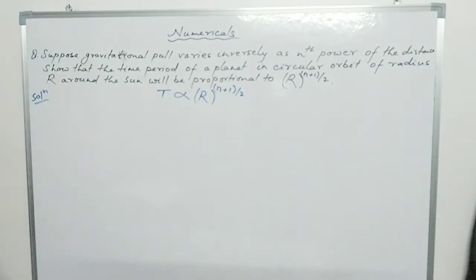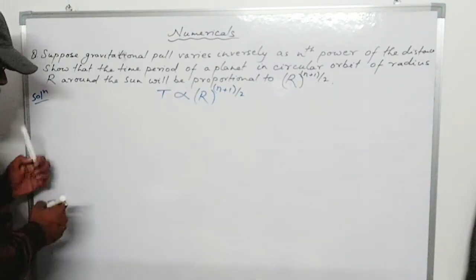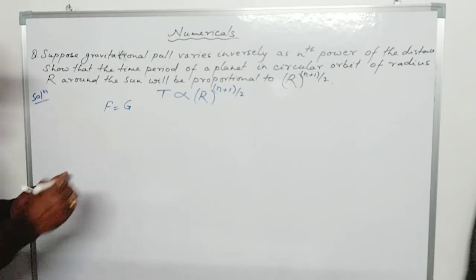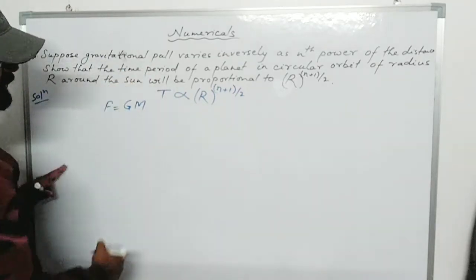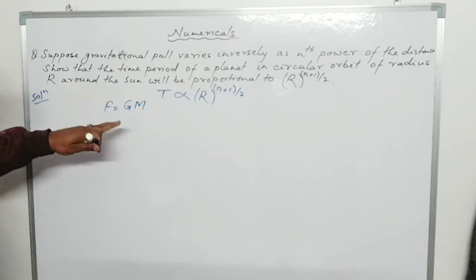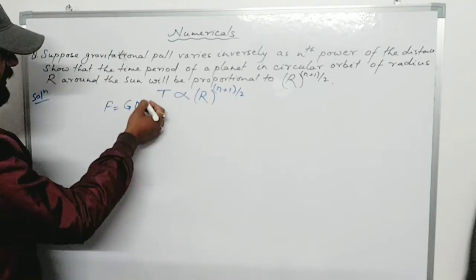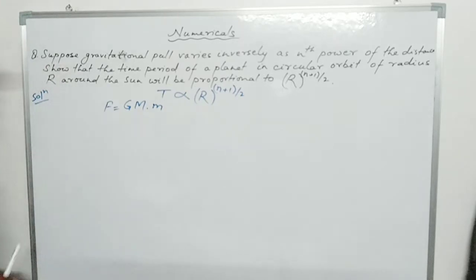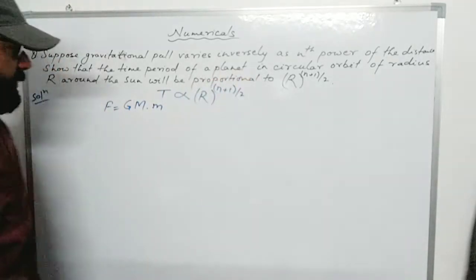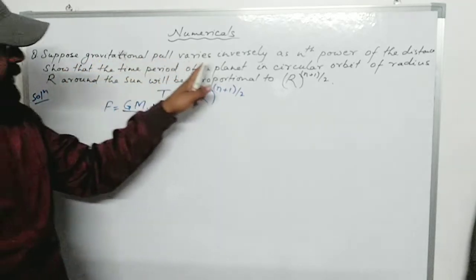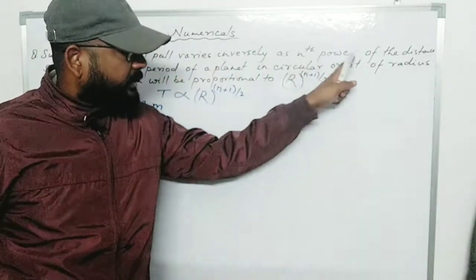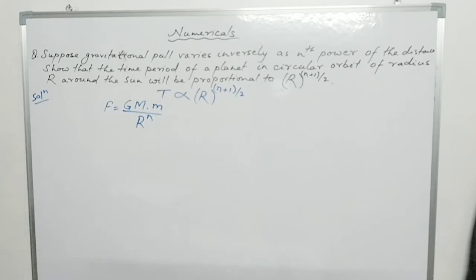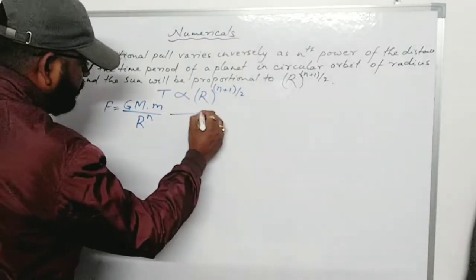We know that the gravitational force F is equal to G times the mass of the sun (capital M) times the mass of the planet (small m), divided by r to the power n. Suppose this is equation number 1.